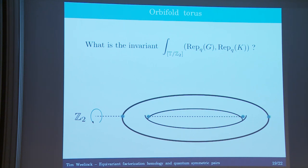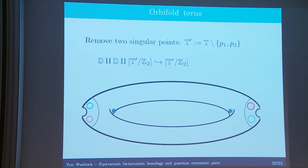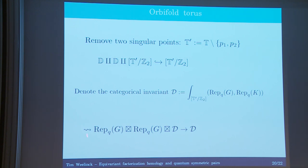Let's go back to the example of an orbifold surface. We want to understand the categorical invariant associated to this orbifold — specifically the torus with two punctures where only two fixed points remain. We're puncturing the torus twice and considering this orbifold quotient. Now I can take two copies of D and embed them together with this punctured torus into itself. By functoriality, if I have an embedding as such, the assigned invariants give a functor, where D is my shorthand for the invariant we're trying to understand.